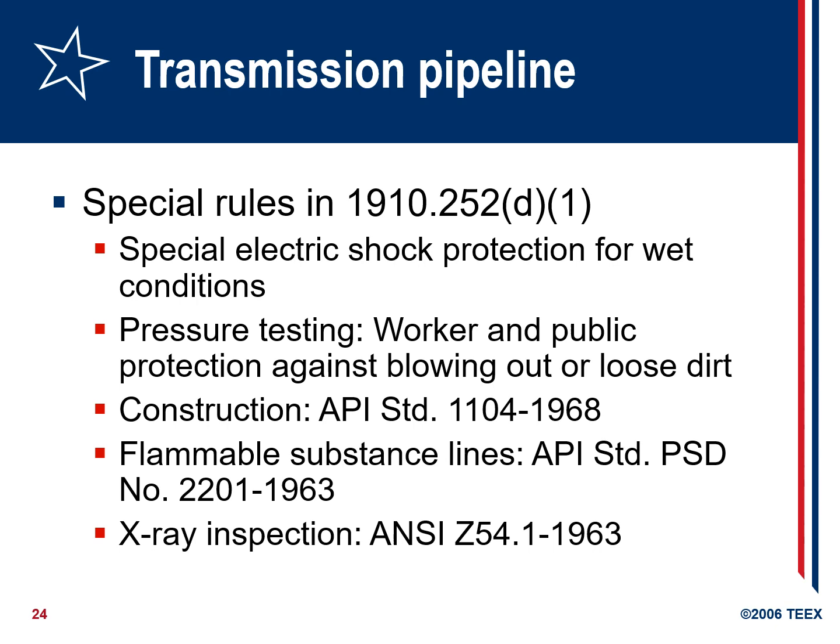For transmission pipelines, special rules apply under 29 CFR 1910.252(d)(1), including special electric shock protection for wet conditions, pressure testing, worker and public protection, and protection against blowing out or loose dirt. For flammable substance lines, API Standard 2201 applies. X-ray inspection follows CSA Z54.1-1963.